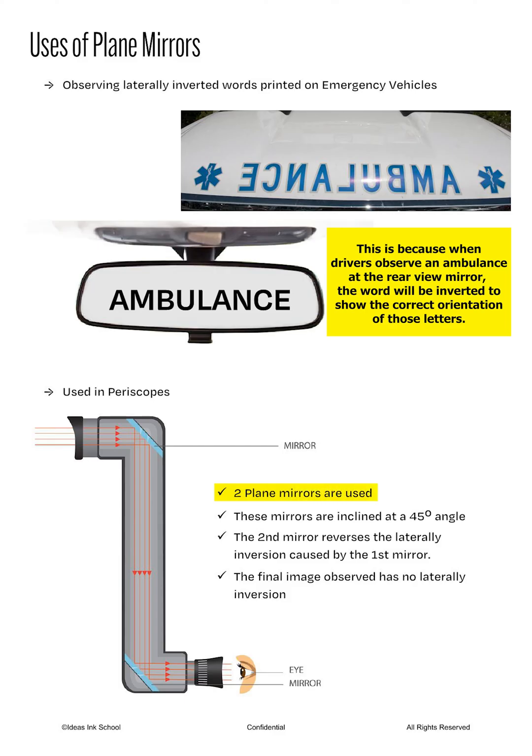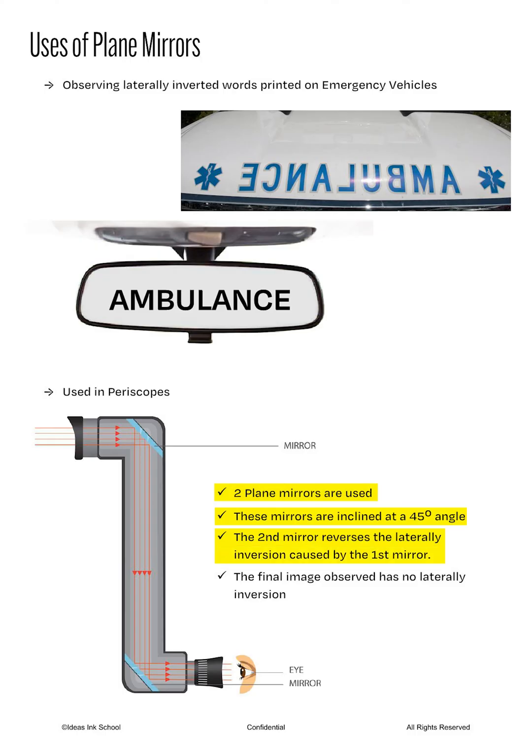They are used to observe dangerous chemical reactions in laboratories and used in military tanks to observe their surroundings. This device uses two plane mirrors which are inclined at 45 degrees. The second mirror is used to reverse the lateral inversion caused by the first mirror. As a result, the final image seen by the observer will have no lateral inversion.